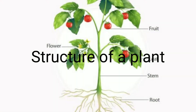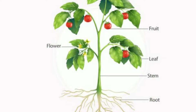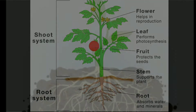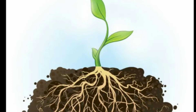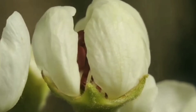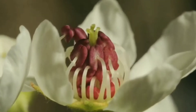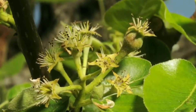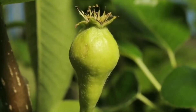The structure of a plant can generally be divided into two parts: the stem, which grows above the ground, and the root, which grows below the ground surface. The root, stem, and leaves are the main parts of plants. From time to time, plants bear flowers for reproduction. Flowers are transformed into fruits. Fruits have seeds, and seeds give rise to new plants.